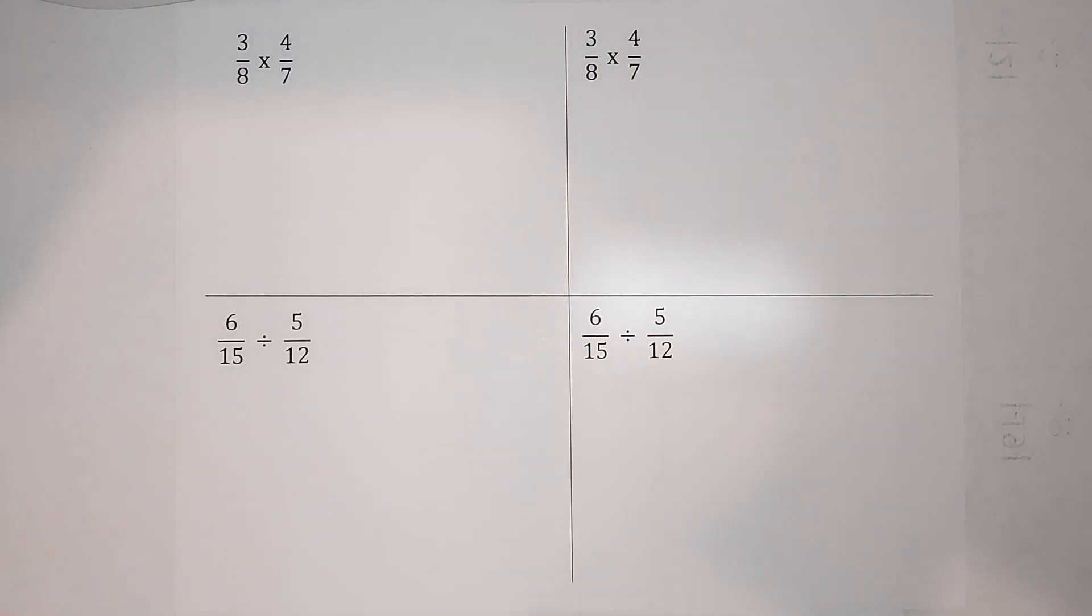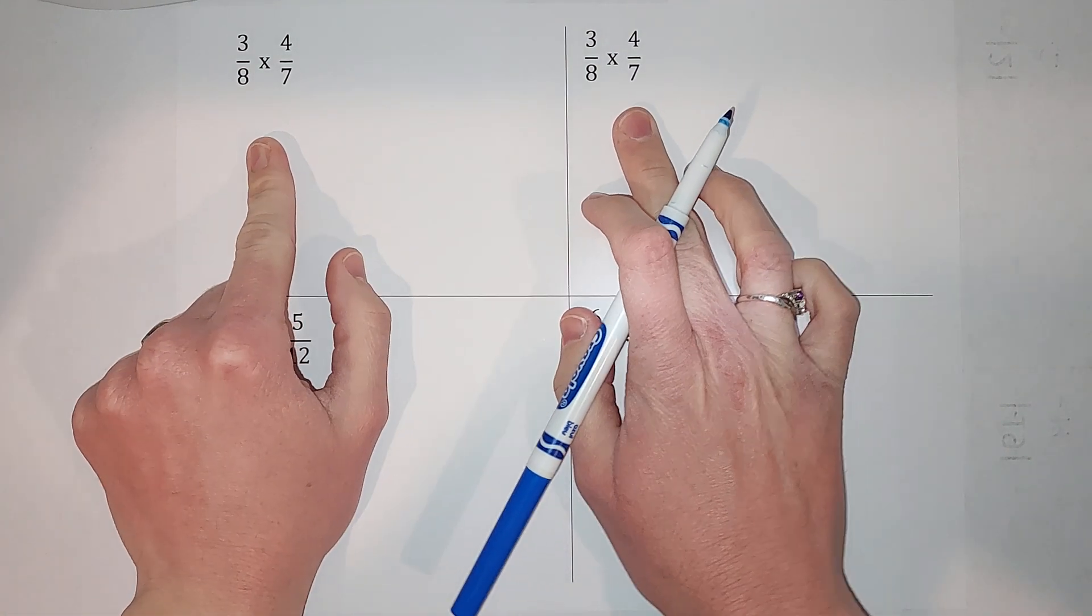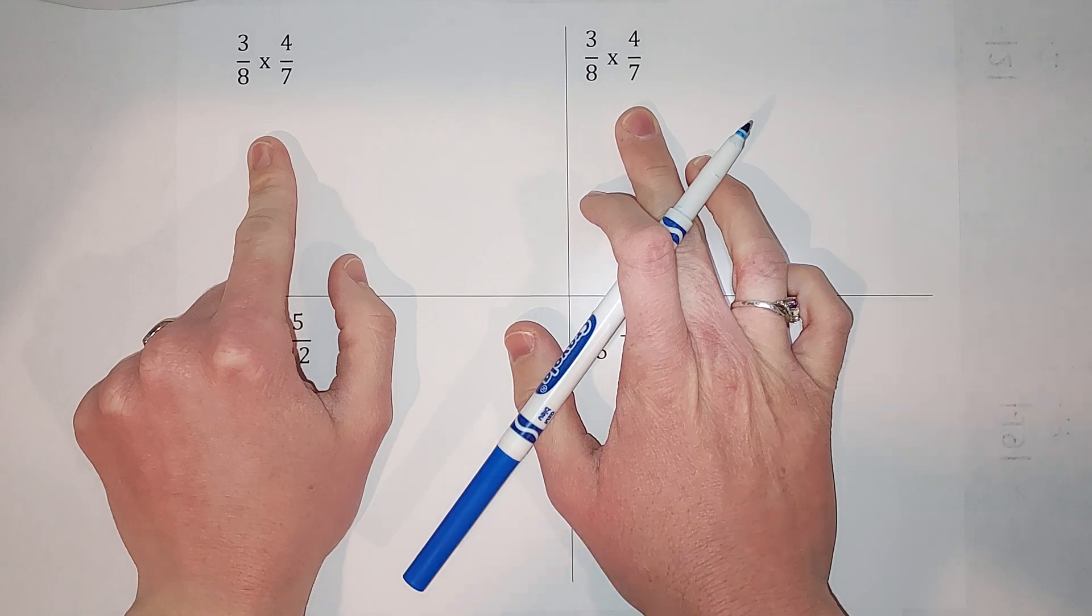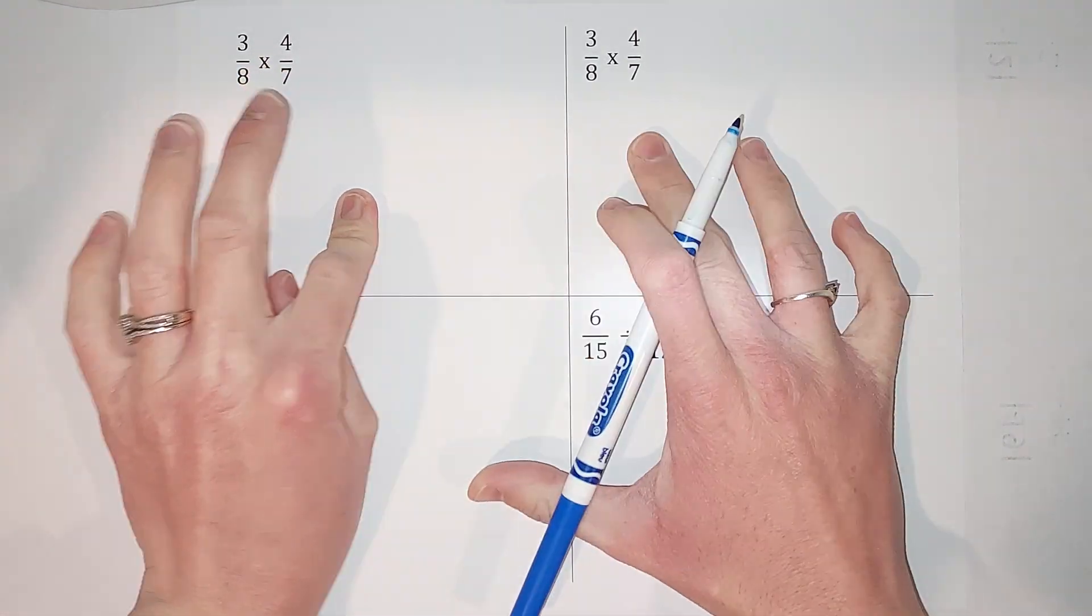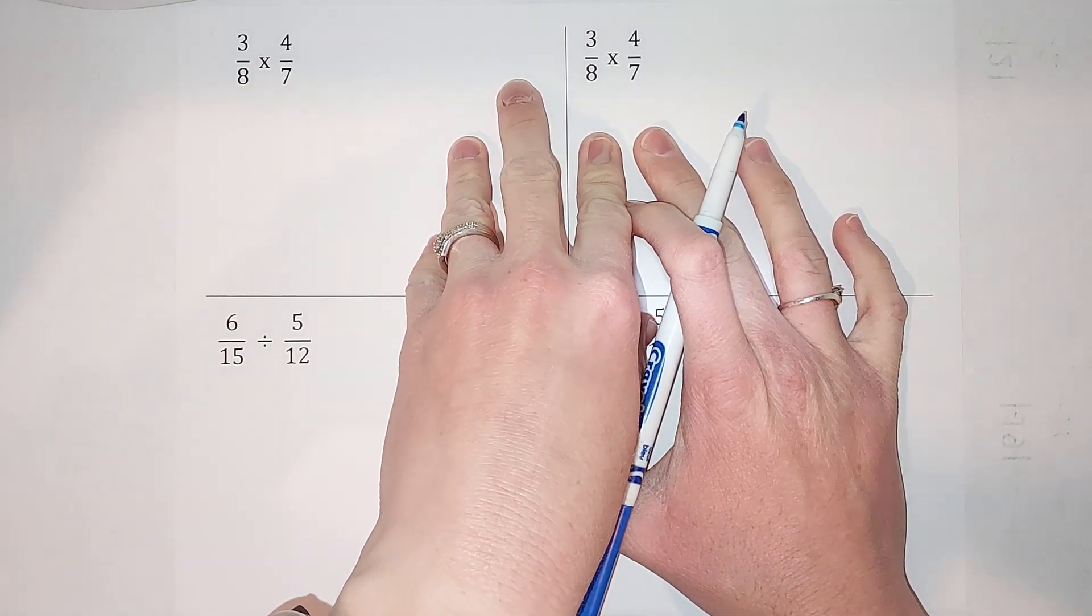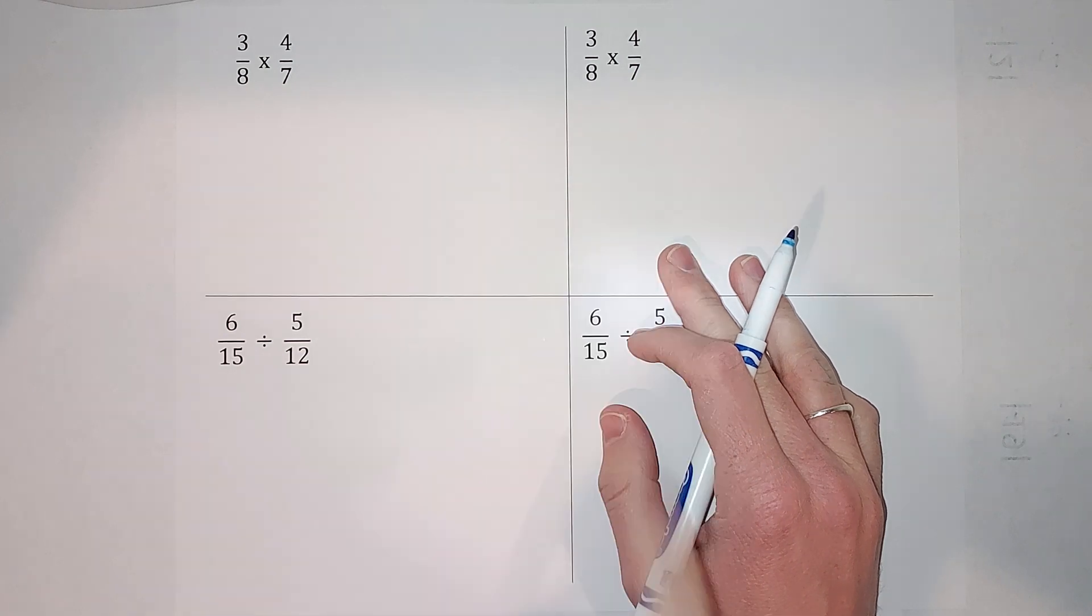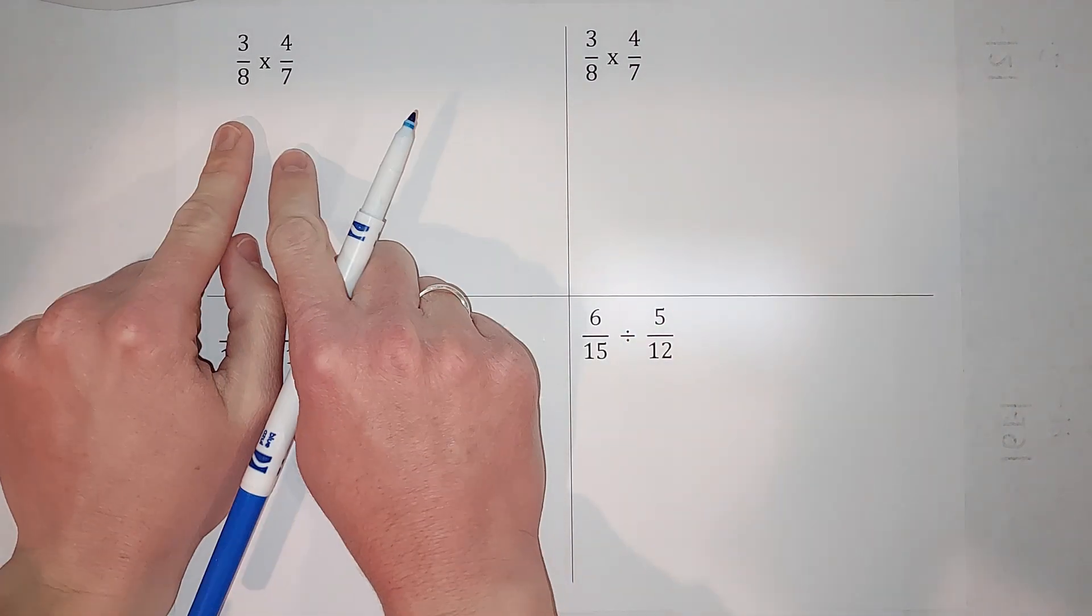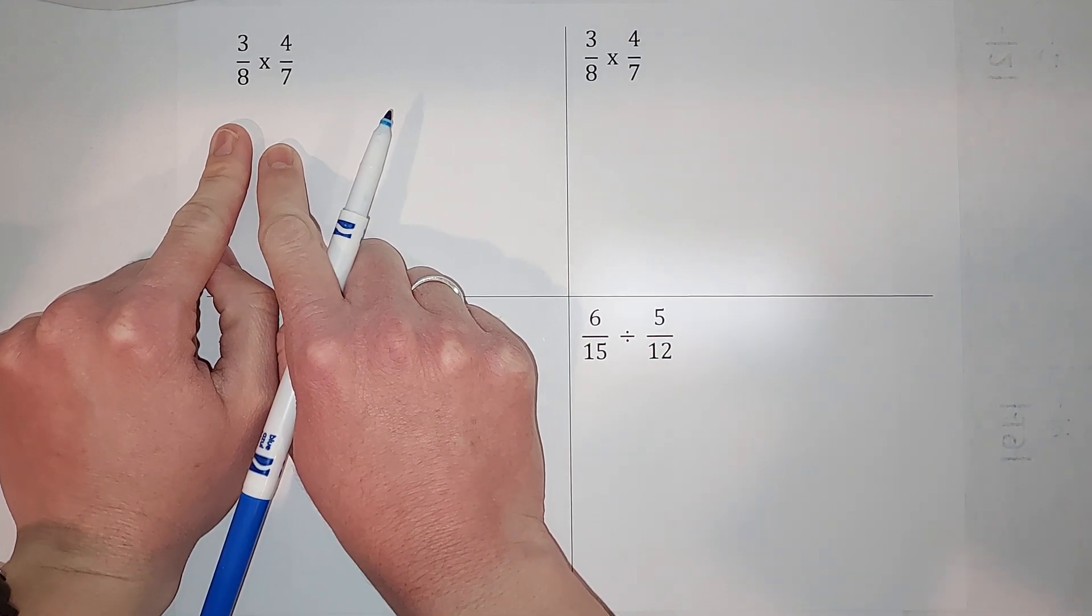All right, let's go ahead and do this. We're going to multiply. Yes, also if you're like 'you're going to do the same problem twice,' yes I am, but there's a reason, trust me. We're going to multiply and then simplify at the end here. We're going to simplify as we go, and you can decide which way you like better. You'll probably like this one better, so hang around for it.